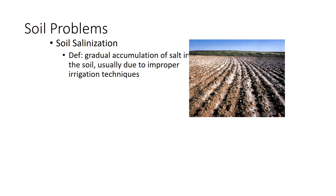Salinization comes from improper irrigation techniques, particularly in our arid areas where we're losing lots of water to evaporation. When it rains, lots of those salts might dissolve in the rainwater and percolate through, which is why it's not as much of a problem in our wetter areas. And why is that a problem? Salt can become toxic to plants at certain concentrations, so what might be very fertile soil becomes toxic to plants because of the buildup of salts.